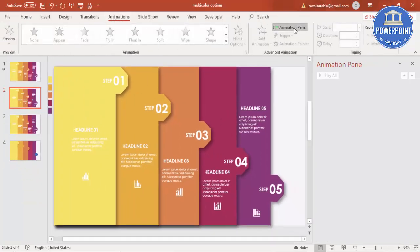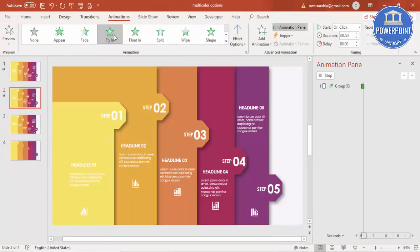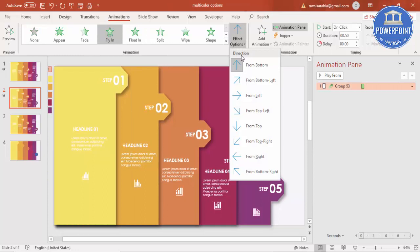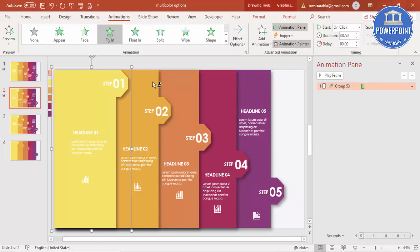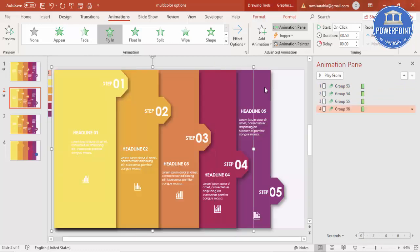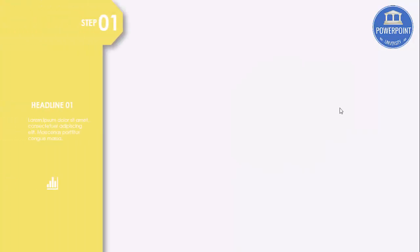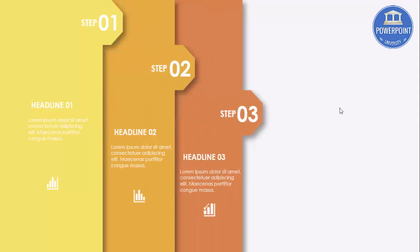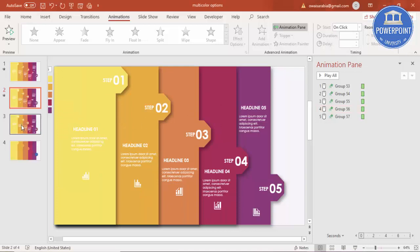Now go to Animations and enable the Animation Pane. Select the first group and apply Fly In, setting the effect direction to From Left. Then double-click Animation Painter and apply it to the second, third, fourth, and fifth groups. Press Escape. In slideshow view the steps fly in one, two, three, four, five.